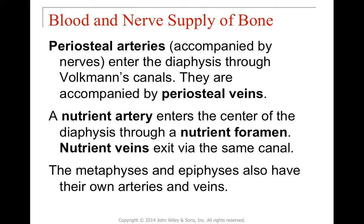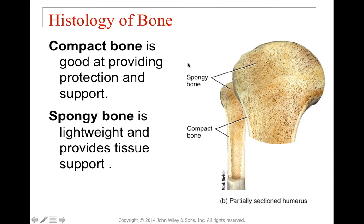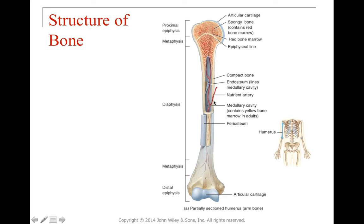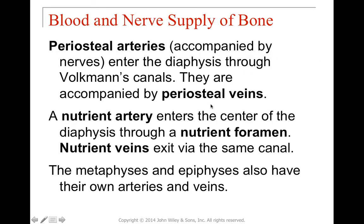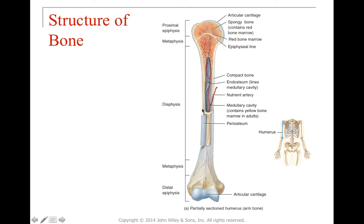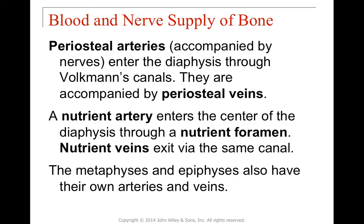How do we feed bone cells with blood and nerves? We have periosteal arteries accompanied by periosteal veins, which enter the diaphysis through Volkmann's canals. The nutrient arteries enter through the nutrient foramen — a small hole — and the nutrient veins exit through the same canal. So there are two major routes: the periosteal route through Volkmann's canals, and the nutrient artery entering the nutrient foramen.